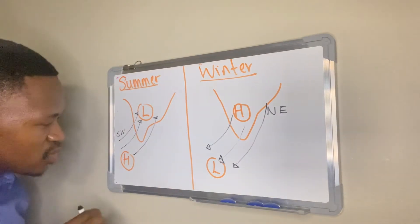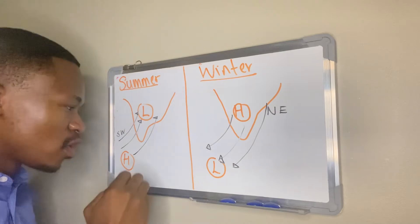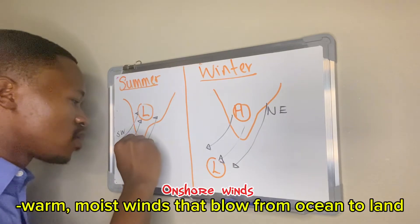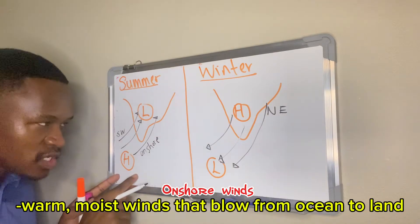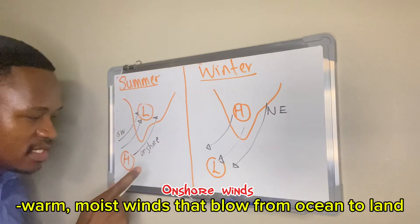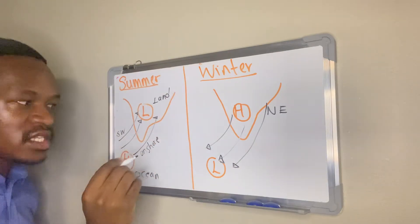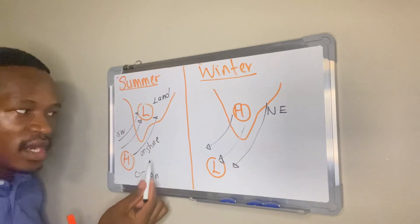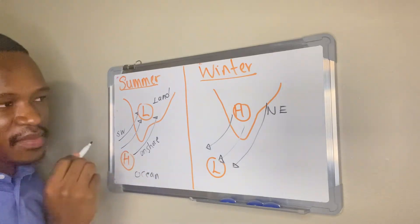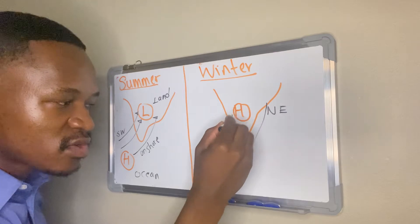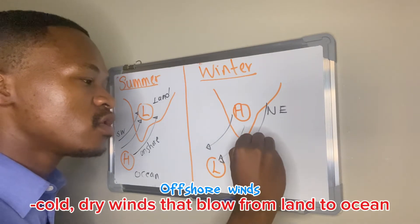Another thing to know is that winds which come from the ocean towards the land are known as onshore winds. But winds which blow from land towards the ocean are known as offshore winds.